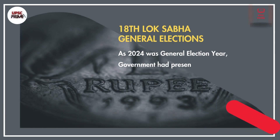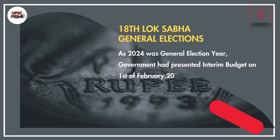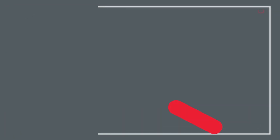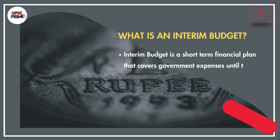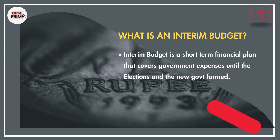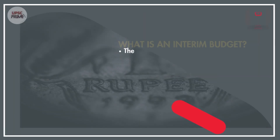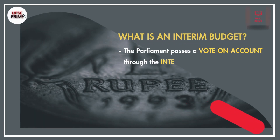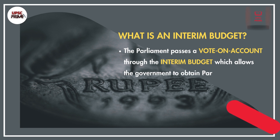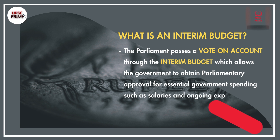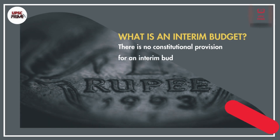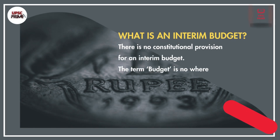As 2024 was a general election year, the government presented an interim budget on 1st February 2024. An interim budget is a short-term financial plan that covers government expenses until the election and the new government is formed. Parliament passes a vote on account through the interim budget, which allows the government to obtain parliamentary approval for essential spending such as salaries and ongoing expenses.